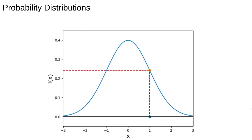Hopefully this diagram makes the equation clear. For any value of x — that is, the random variable — the probability density function gives the probability of observing that value of the random variable. Actually, this is only strictly true for a discrete distribution, that is, for a probability mass function.